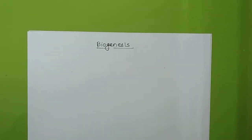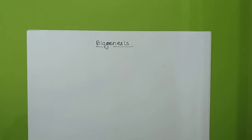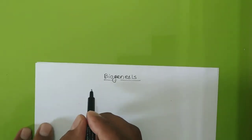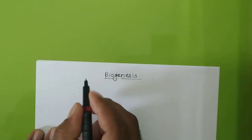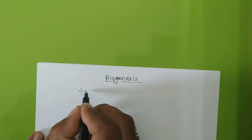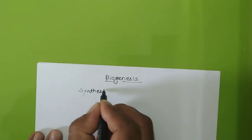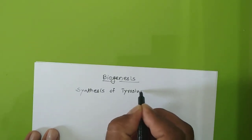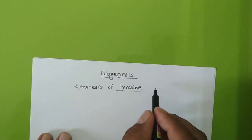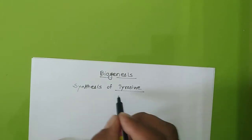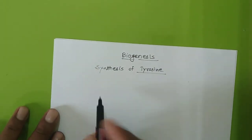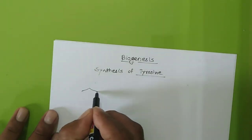Hello students. In the last lecture we learned how to synthesize aromatic amino acids from shikimic acid. We learned the synthesis of phenylalanine from shikimic acid. Today we will learn the next part, which is the synthesis of tyrosine from shikimic acid. No need to write that down again — I will start from shikimic acid.